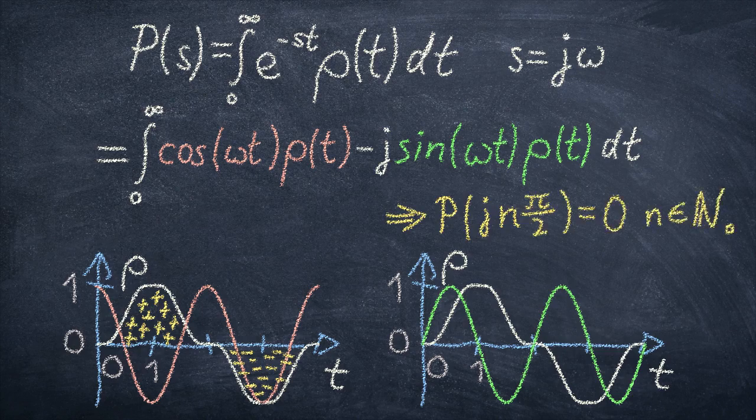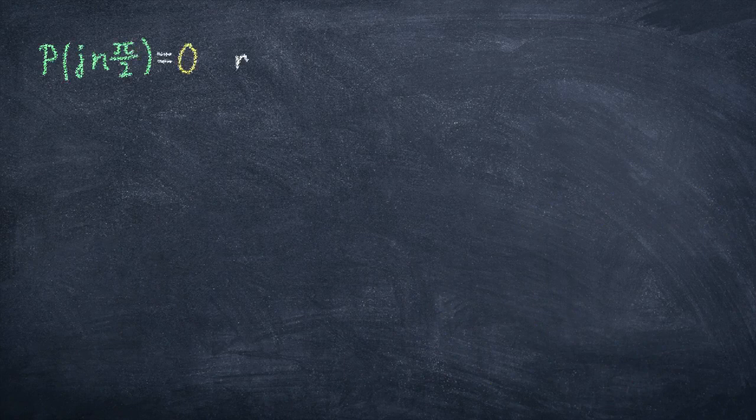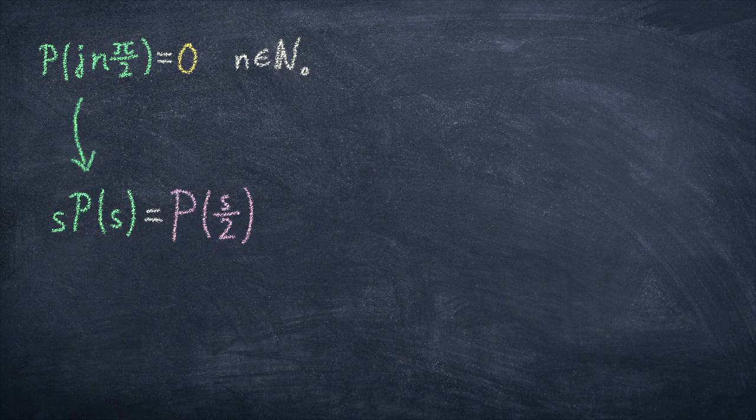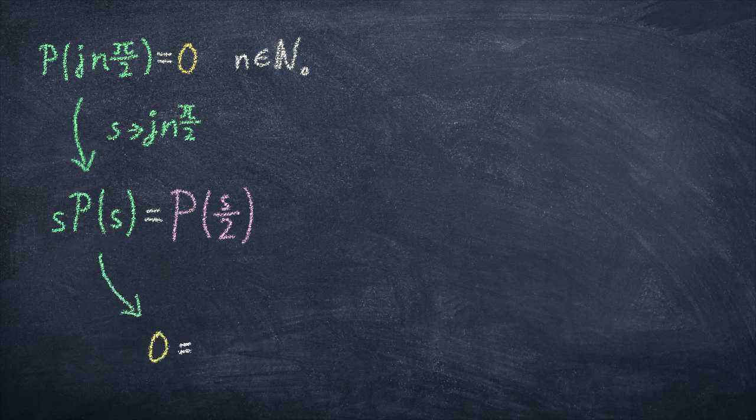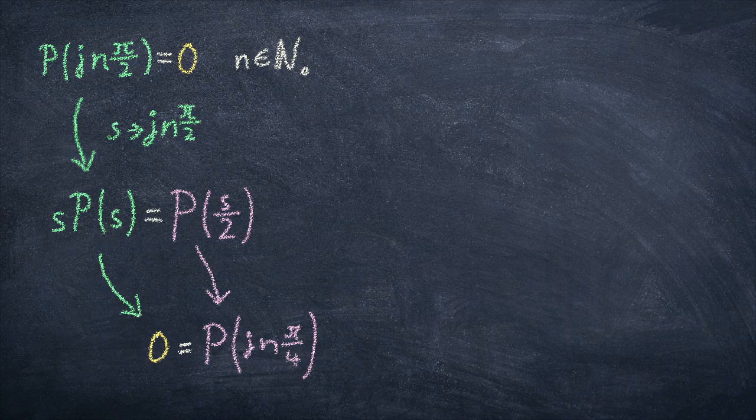This means that the Laplace transform of rho becomes zero at all points where s can be written as n times j times pi over two. That is crazy interesting on its own, I know, but just you wait. So here is what we just found. Now we plug that into the equation that we found before. On the left side. Meaning, s has to be set to jn pi over two. Then the left side becomes zero, because rho of jn pi over two is zero, as we just said above, and multiplication with s won't unzero it. The right side becomes rho of jn pi over four. Interesting. So that term is also zero. So now we have twice as infinitely many zeros. And it doesn't stop there.